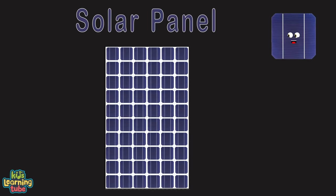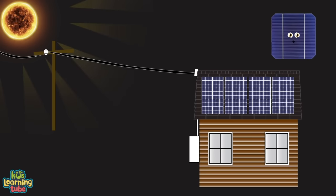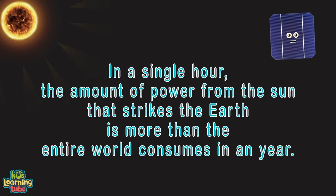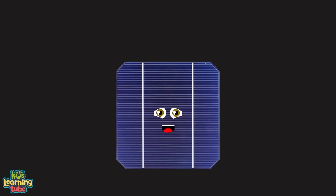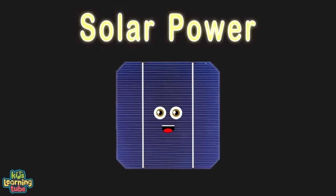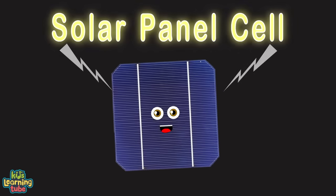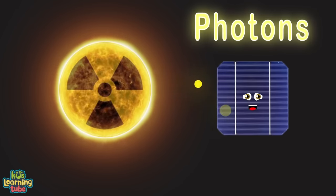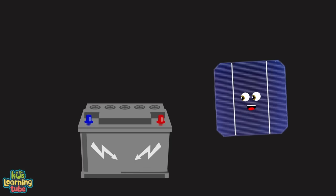A single solar panel has many solar cells to create more energy in a small space. When too much energy is produced, it gets sent back to the electrical grid to help produce more electricity. The sun produces more energy each hour than we will ever need. There are so many ways to create renewable energy. Our sun is a nuclear reactor shooting photons at us — let's harness this power through silicon into batteries.